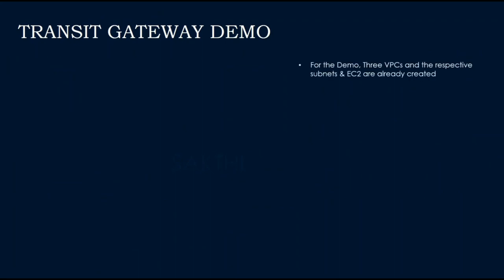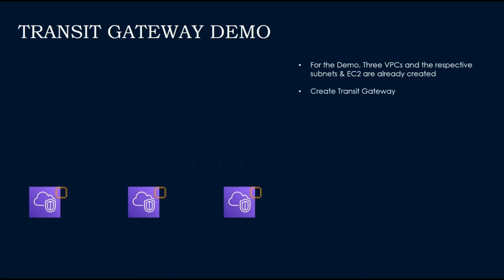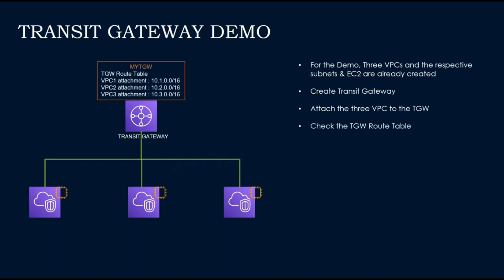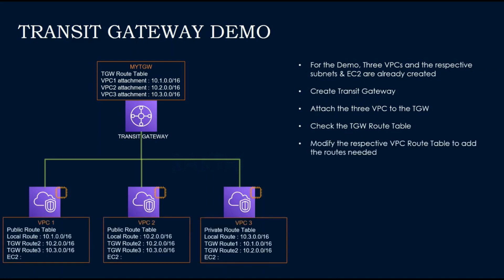Now we'll show how to set up a Transit Gateway. For this demo, I have created three VPCs with their respective subnets and EC2 instances. First, we will create a Transit Gateway and attach the three VPCs to it. We'll check the Transit Gateway route table, which will automatically propagate the VPC attachments. Then we will modify their respective VPC route tables to add the routes needed, and test the connections between all the VPCs through the Transit Gateway.